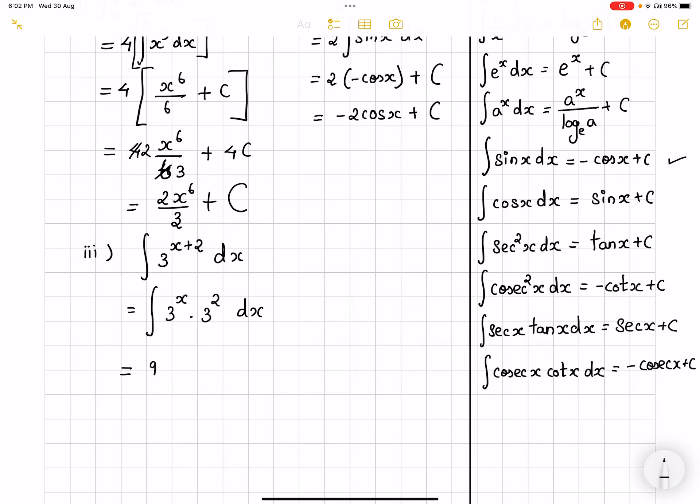And I have 3 to the power of x dx. It is in the format of integral a to the power of x dx. So which is going to be 9 into 3 to the power of x divided by log base e of 3 plus c. So this is going to be our answer for the third one. Now fourth one.